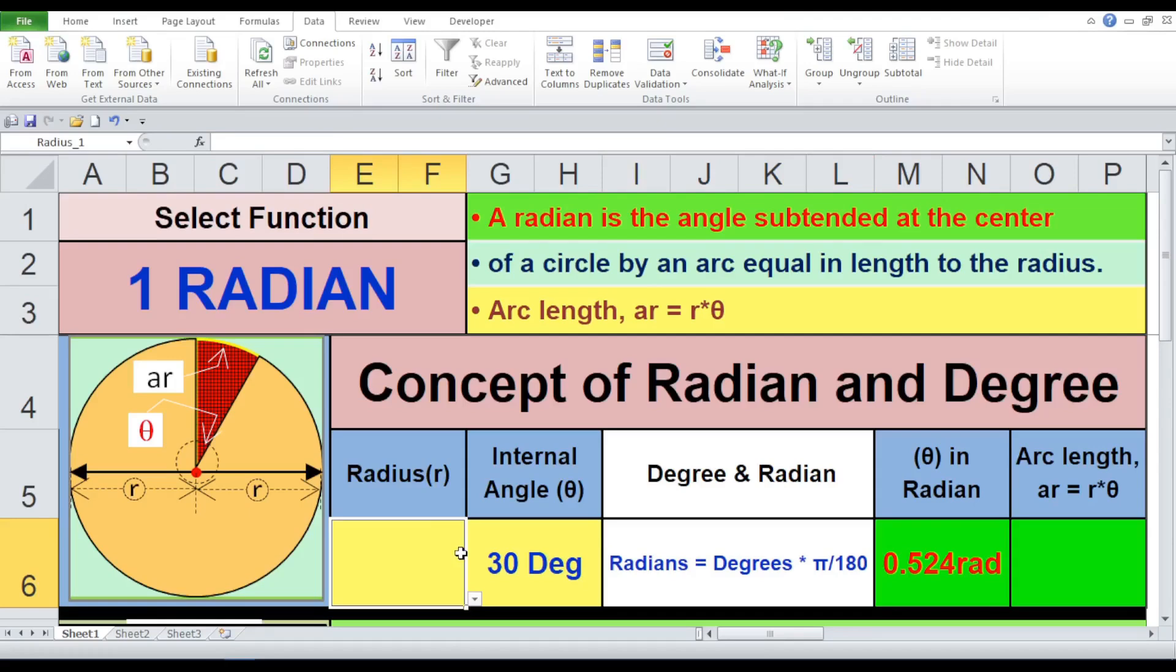Internal angle theta: enter the angle in degrees. Theta in radian: Excel will automatically convert the degrees to radians using the formula mentioned earlier. Arc length ar: the formula ar equals r into theta will calculate the arc length, where theta is now in radians. Let's put this into action with some real world examples.